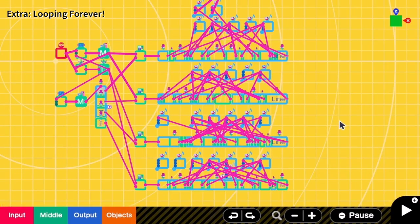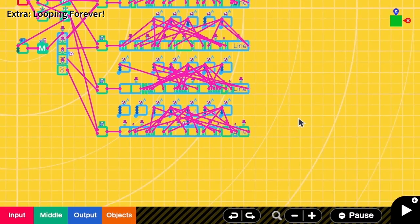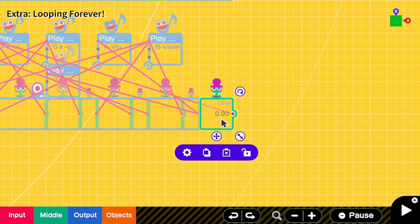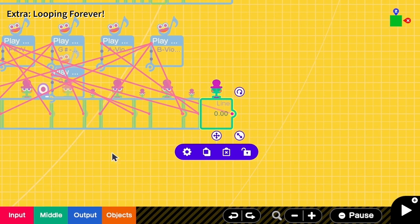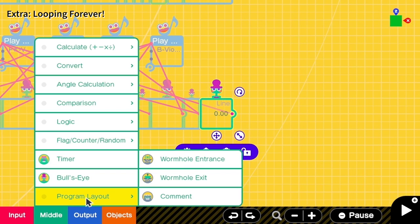Then in the last step, we want to continue looping this. So when we have reached the last node, we have to send a signal to reset the counter. But our counter is quite far away, so here we need to add a wormhole entrance.